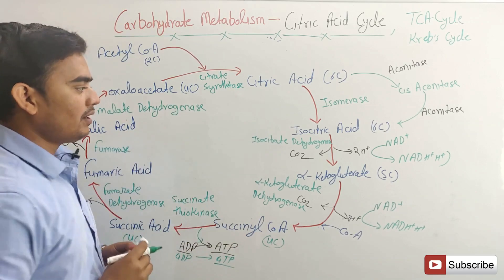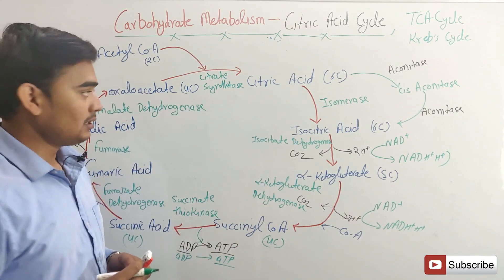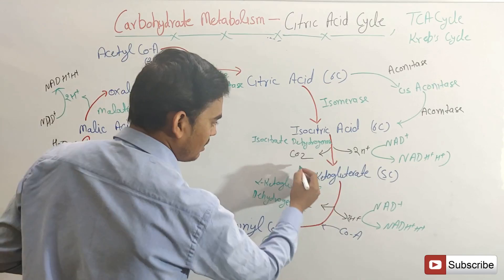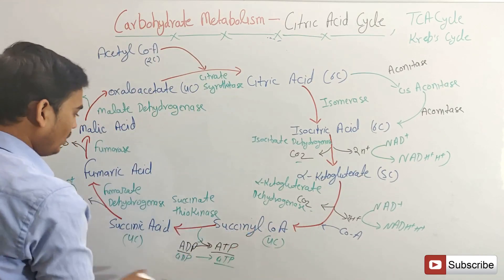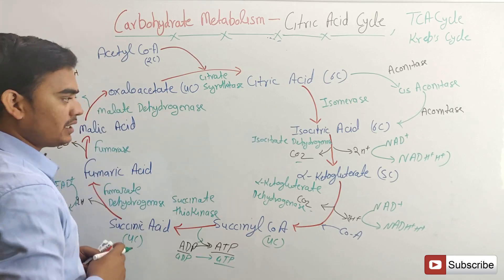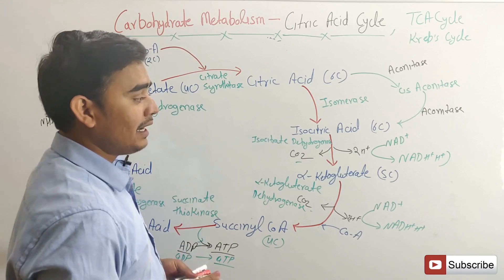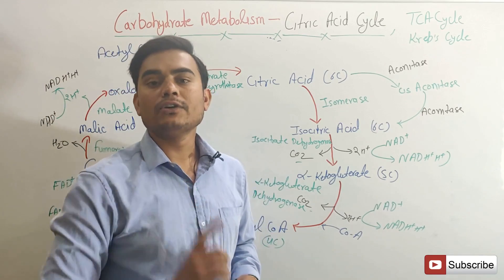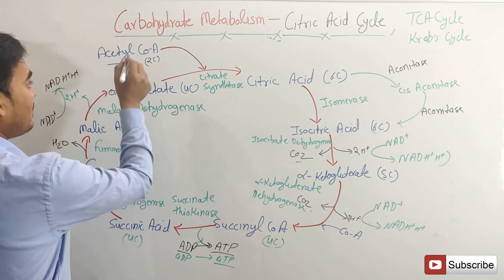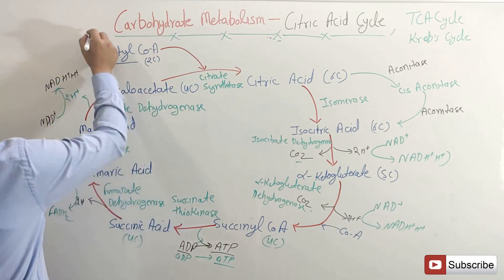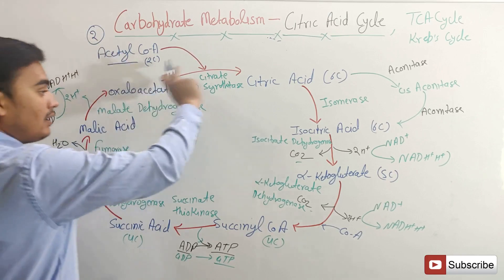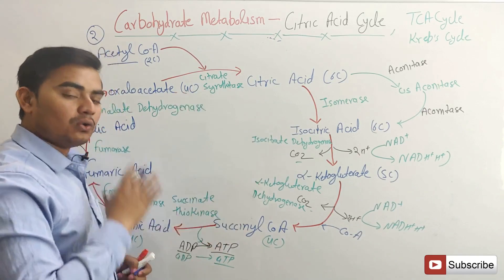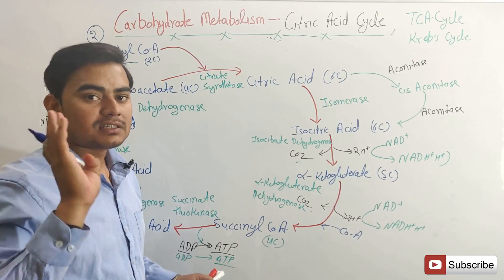This is the brief overview of the Krebs cycle. Starting from the two-carbon acetyl-CoA, it combines with oxaloacetate to become six carbons. Then, through removal of two carbons at different steps, it forms succinyl-CoA — a four-carbon compound — which is then converted back to oxaloacetate. Since glycolysis produces two pyruvic acid molecules from one glucose, there will be two acetyl-CoA moieties, meaning the Krebs cycle runs two times per glucose.